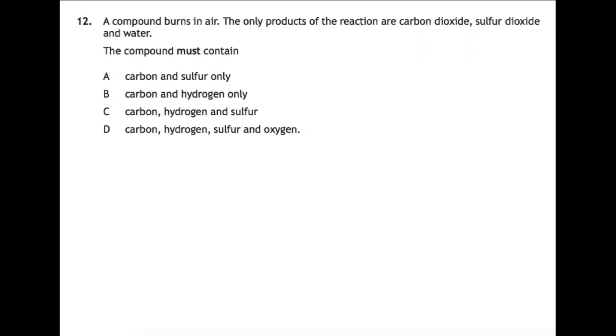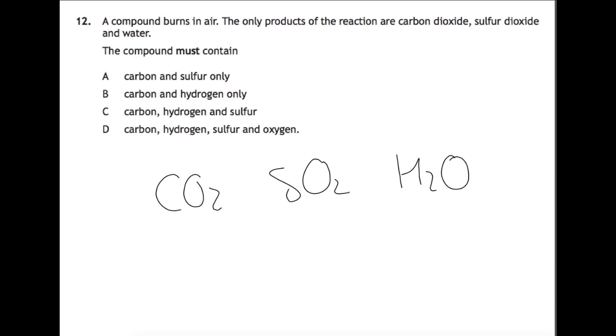Here we're looking at combustion. We have a compound that burns in air. Air contains oxygen and the products of the reaction are carbon dioxide, sulfur dioxide and water. So CO2, SO2 and H2O. We're burning this compound in air so we know that the compound must have contained carbon, sulfur and hydrogen. We cannot say for certain that it contained oxygen, as we're burning these in oxygen. We don't know that the oxygen that has made the carbon dioxide, sulfur dioxide and water, has that came from the compound or has it came from the air. So all we can say for sure is that it contained carbon, hydrogen and sulfur.